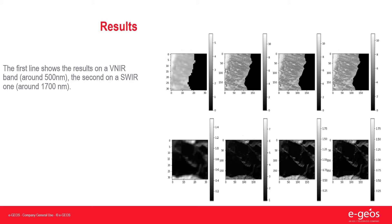Here are some results. The first row shows the result on a VNIR band around 500 nm, and the second shows the result on a SWIR 1 band around 1700 nm. From left to right, we have the lower resolution hyperspectral band, the panchromatic band, the prediction, and the ground truth.